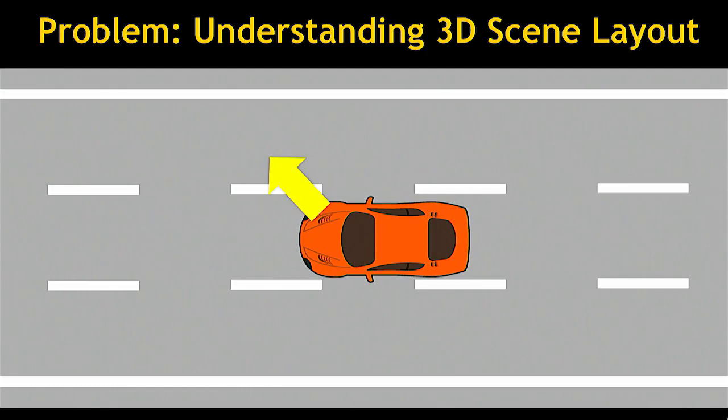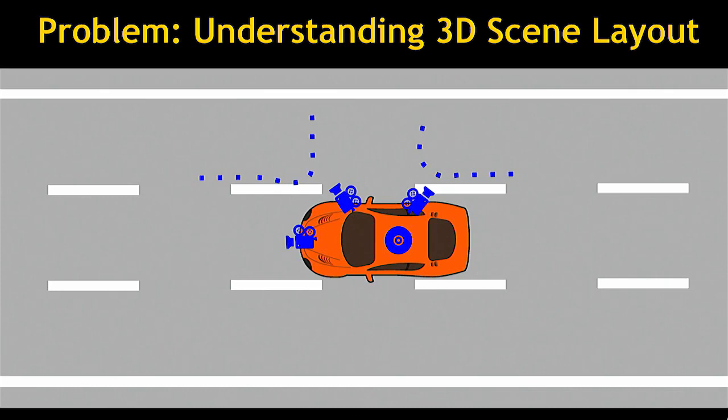This problem comes up in a number of different sectors. I happen to like assisted driving, so I'll illustrate it that way. Imagine you're driving and you want to change lanes. Maybe you're driving a new Tesla, so you have eight cameras and some radars, and we'll even bolt a laser scanner on top. All those sensors will tell you that there's some stuff on the road, and now is probably a bad time to change lanes.